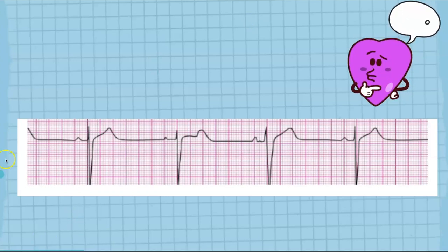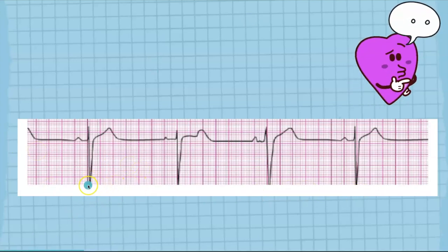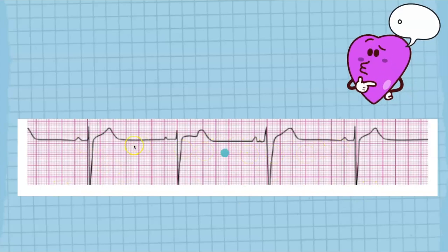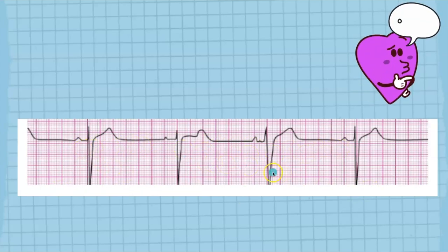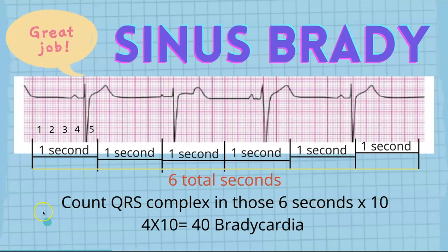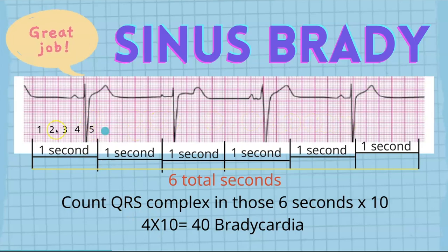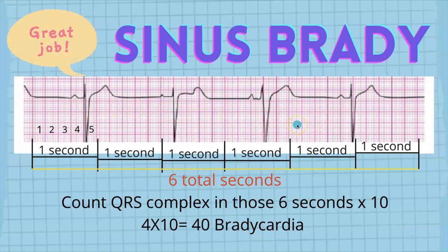So in this scenario, just from eyeballing it, this is about a six-second strip and we can see that it's about 40 beats per minute. There is a P wave before every QRS complex and it does appear regular. So what do you think this rhythm is? If you said sinus brady, you are correct. Each little box here — five of these little boxes equals one second, and this is six seconds total. You multiply and get 10, 20, 30, 40 — so the heart rate is about 40. This rhythm is sinus brady.